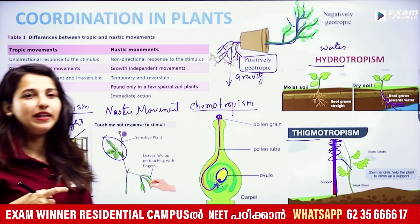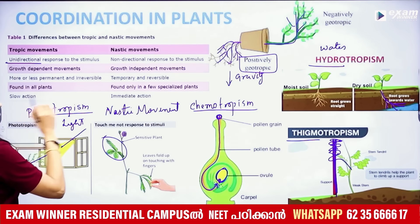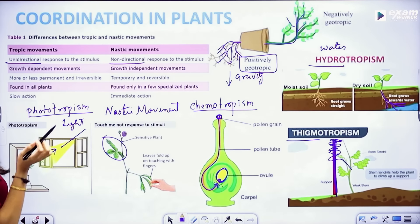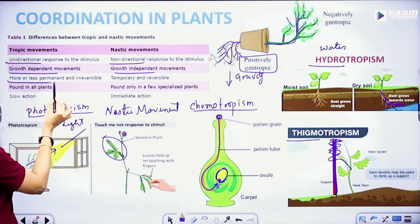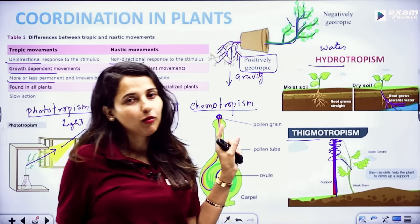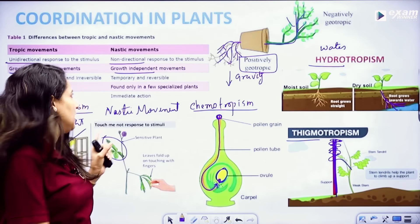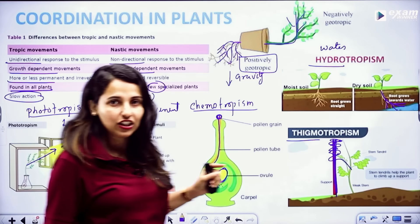Here we are comparing tropic movements and nastic movements. Tropic movement is unidirectional, while nastic movement is non-directional. Tropic movements are growth-dependent and more or less permanent, while nastic movements are growth-independent and immediate actions.